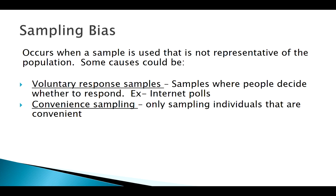Another way we might get sampling bias is through a convenience sample. I don't want to just use whoever is convenient to me. If I want to know the thoughts of all students at a university, using a single class may not be the most representative sample of opinions of that entire university. We want to steer away from both convenience sampling and voluntary response sampling.